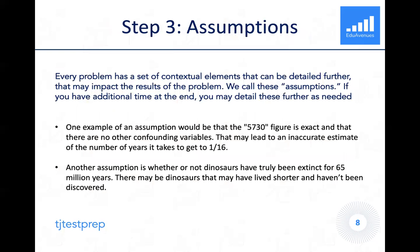Our third step is to check our underlying assumptions. Every problem has a set of contextual elements that can be detailed further, and these may ultimately impact the results. One example of an assumption would be that the 5,730 years figure for one half-life is exact with no other confounding variables. That may lead to an inaccurate estimate of the number of years to reach 1/16th of the initial substance remaining — for example, one half-life could be 10,000 or 15,000 years, putting us very far off from that 22,920 figure.